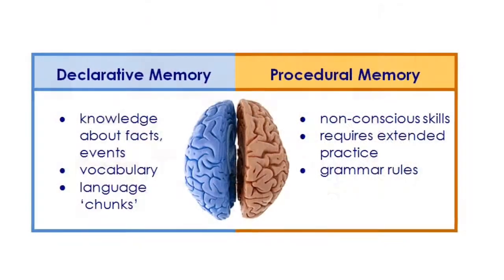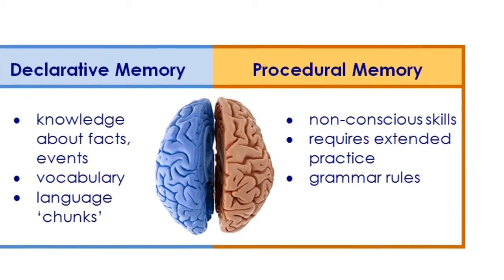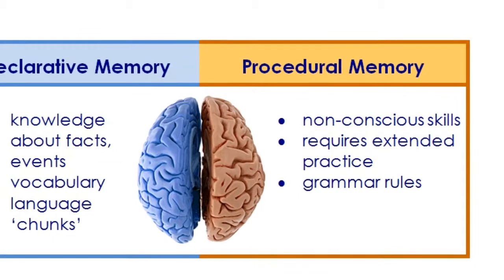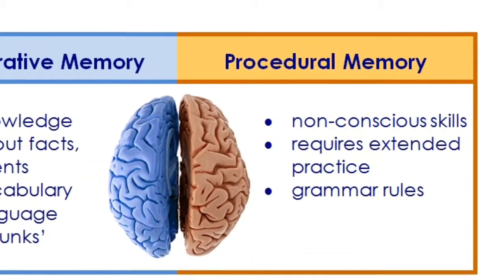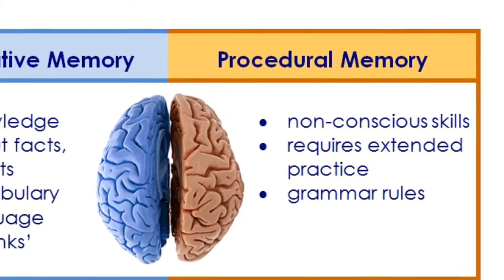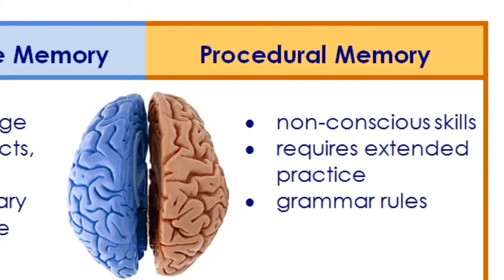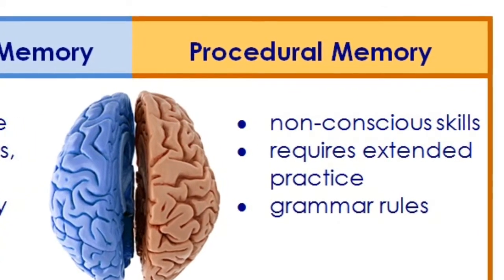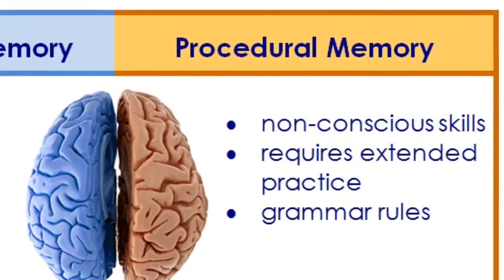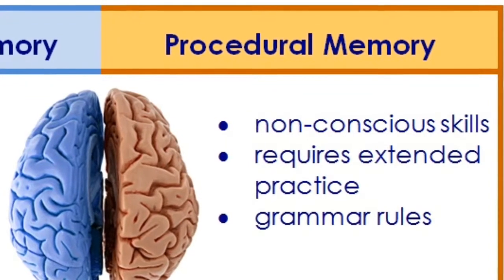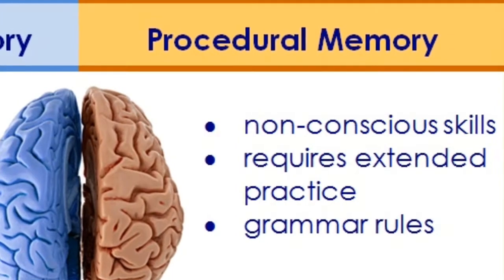It's our other memory system, procedural memory, that we use for acquiring new skills such as driving or juggling, and it's this system we use to master the rule-governed sequencing of language, which we call grammar. This is a much lengthier process than just learning facts or vocabulary, and requires a great deal of exposure to the language — it's why most British people don't speak a second language. We don't acquire grammar just by having it explained to us and saying some practice sentences; it's far more complex than that, which is another very good reason not to spend a great deal of precious classroom time on grammar.